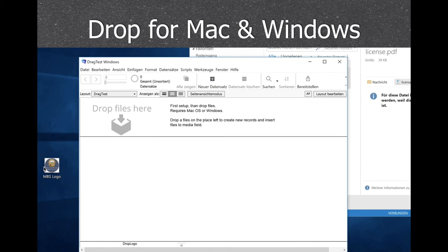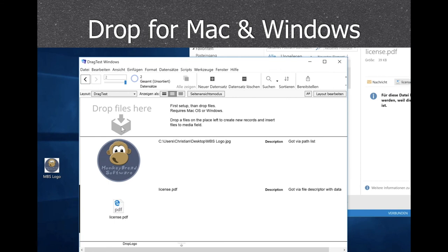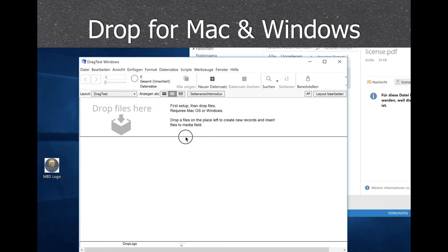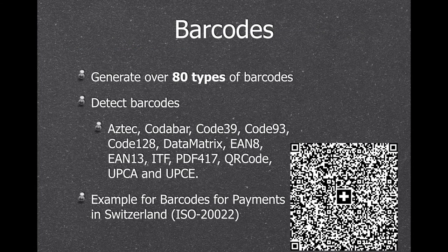For Mac and Windows we offer drag and drop. You can select a file in Explorer, drop it to the drop area, and a script is triggered which allows you to process all the files. This allows you to accept files delivered on promise — so this works for the Photos application on Mac as well as for Outlook attachments on Windows. The MBS plugin can work with barcodes — we can generate over 80 types of barcodes, so if you need anything with barcodes please check the plugin. We can also detect barcodes from the given list, so if you have a QR code and you'd like to get the text back, we can extract that. And for our Swiss users, we have an example for the payment barcodes used in Switzerland so they can make their invoices correctly.